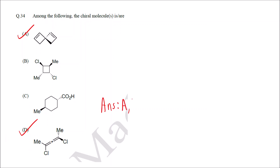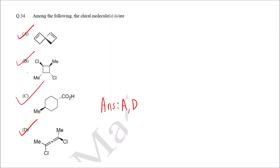So the correct answers are option A and option D. If you mark B as an extra option you will not get the credit; if you mark C as an extra option you will not get the credit; if you mark all A, B, C, D it will be incorrect. Only the correct options are A and D. I hope you have understood the solution — thank you.